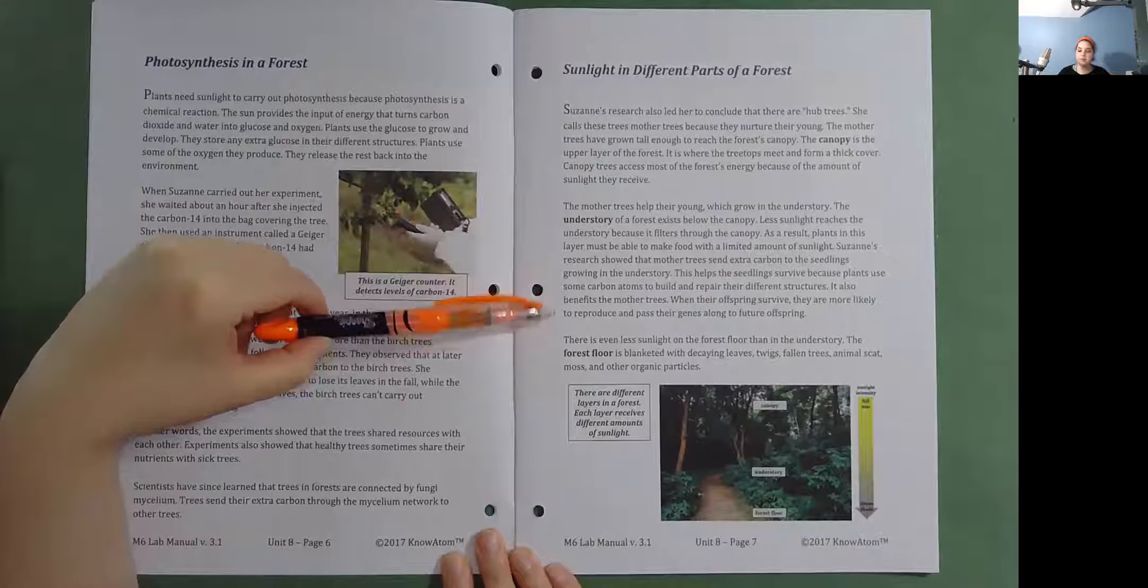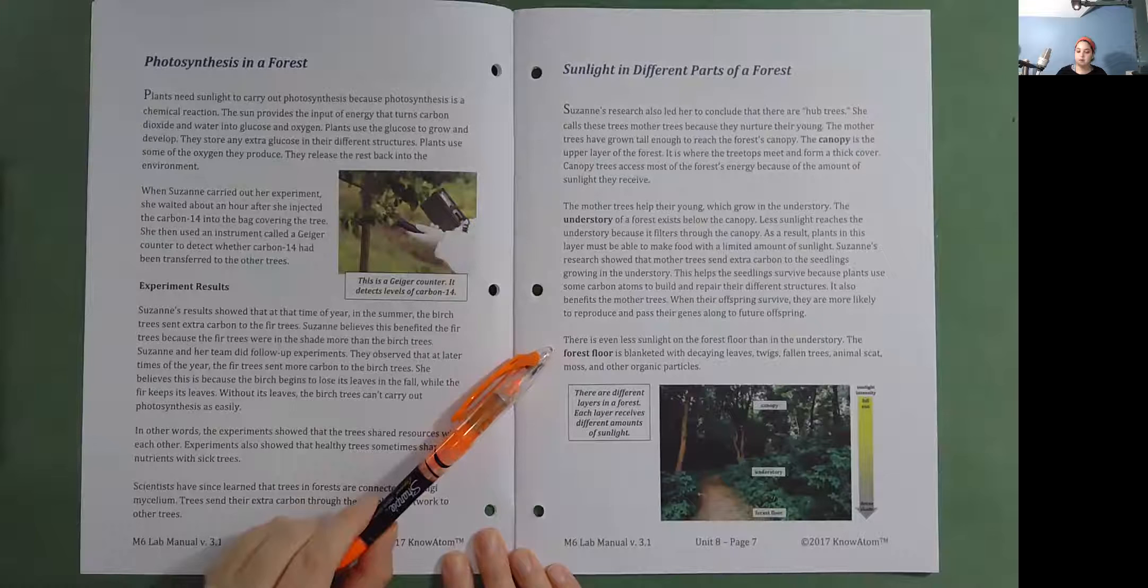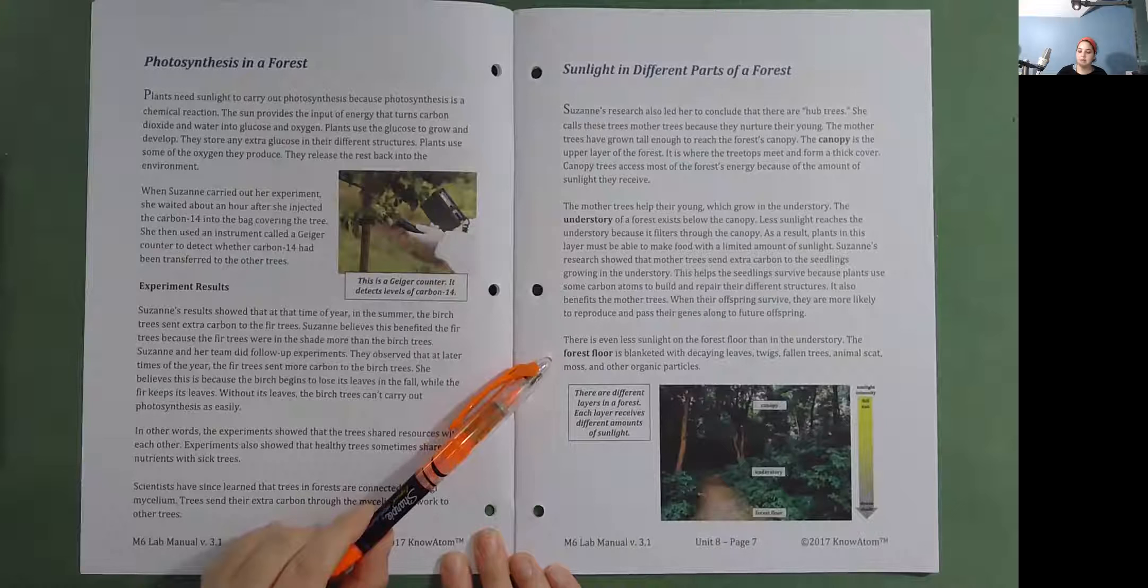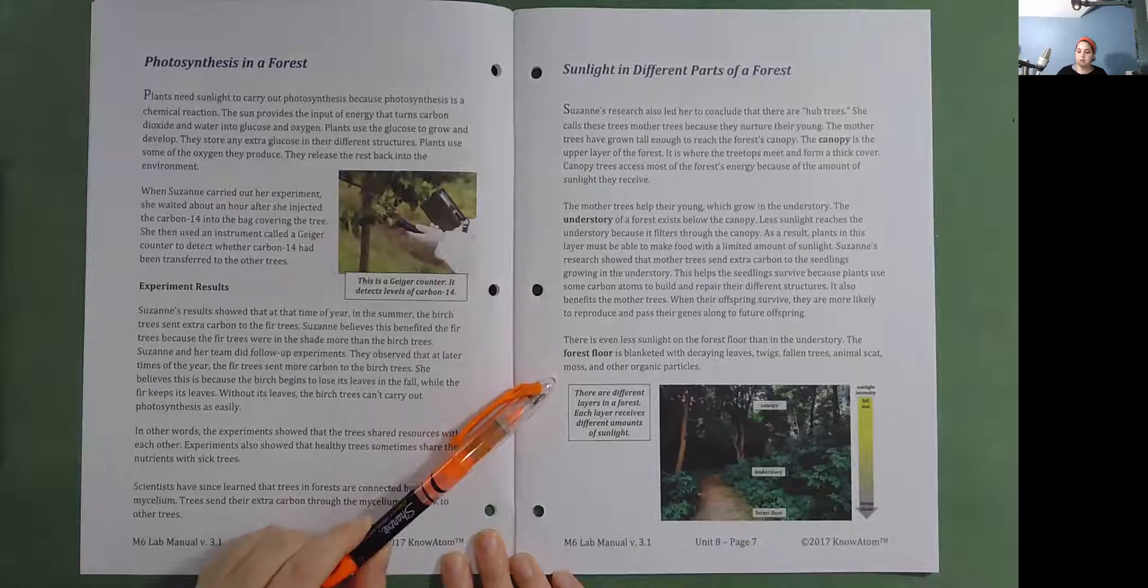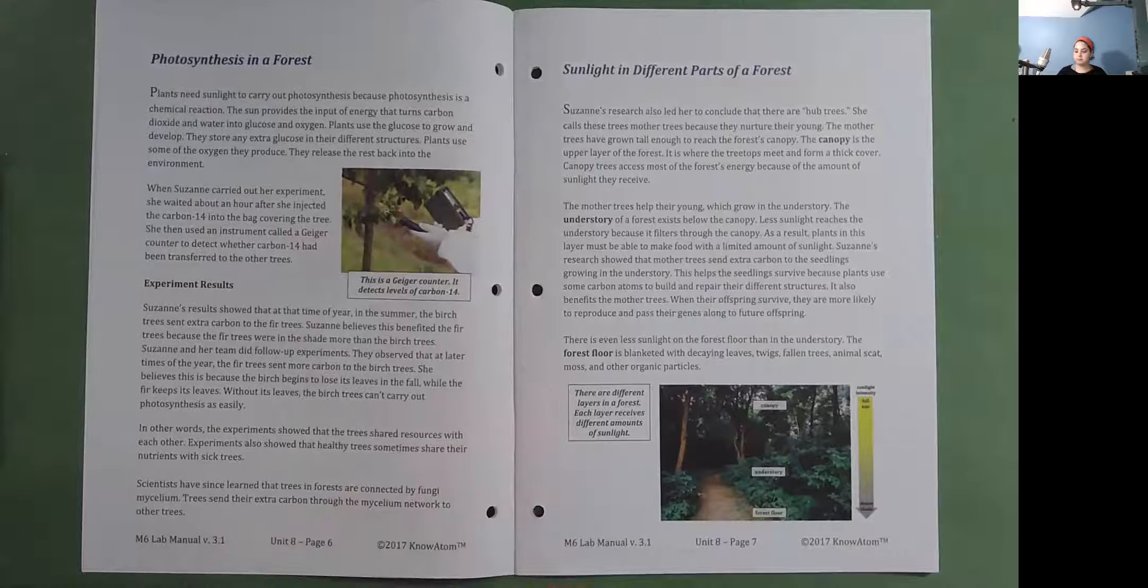This helps the seedlings survive because plants use some carbon atoms to build and repair their different structures. It also benefits the mother trees. When their offspring survive, they are more likely to reproduce and pass their genes along to future offspring. There's even less sunlight on the forest floor than in the understory. The forest floor is blanketed with decaying leaves, twigs, fallen trees, animal scat, moss, and other organic particles. There are different layers in a forest. Each layer receives different amounts of sunlight.